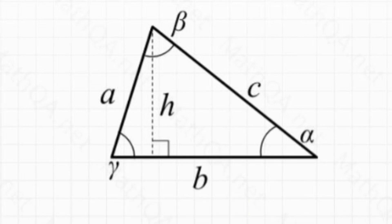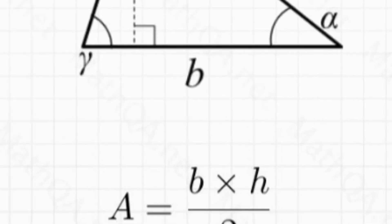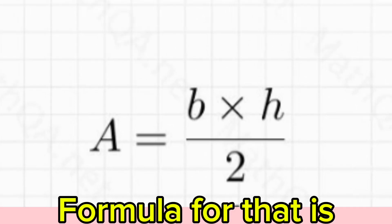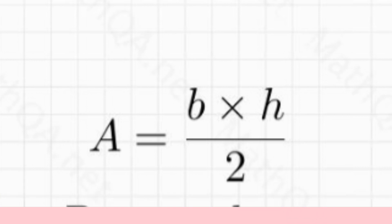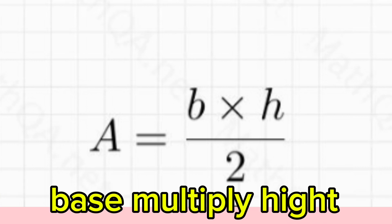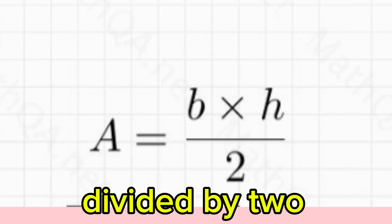How to find area of a triangle. The formula for that is: if A is area, then A is equal to base multiplied by height, divided by 2.